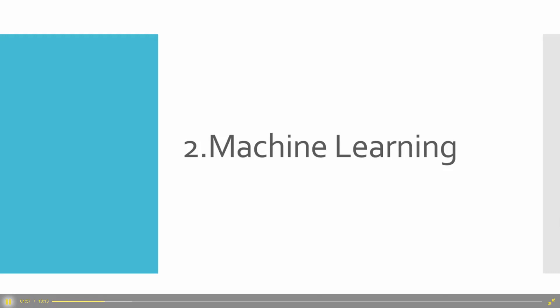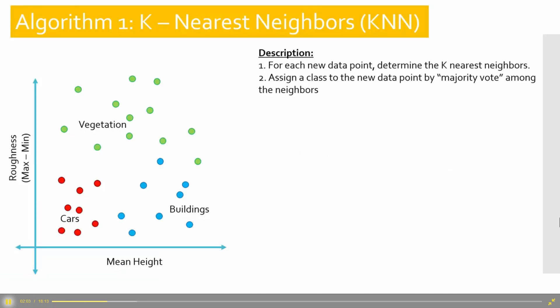Now we'll look at some different algorithms for machine learning. This is a random grouping of data. The first one is K-nearest neighbor. When we have a new data point and want to figure out what class to assign it, we look at its three nearest neighbors — in one case they're all green, so we classify it as green. In another case, two nearest neighbors are blue and one is green, so since the majority are blue, we classify it as blue.